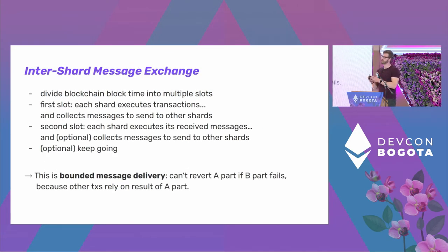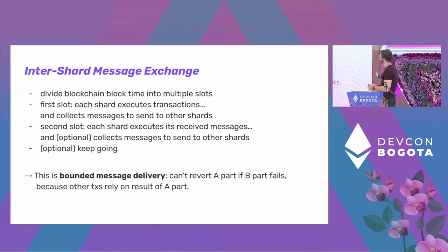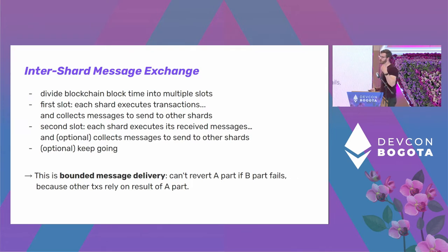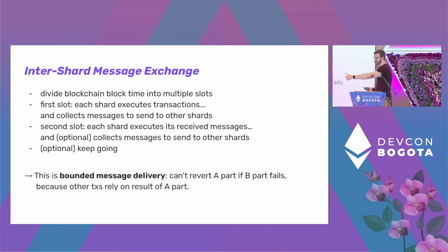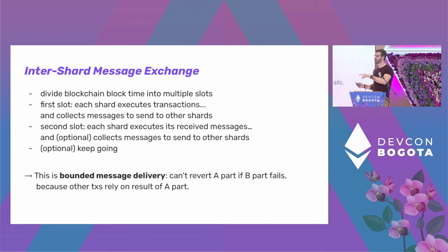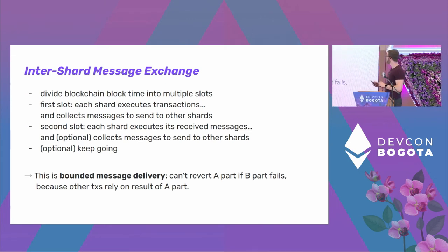Instead, let's reduce the number of exchanges between shards and bound this very tightly. The idea is to divide the block time into multiple slots. In the first slot, every shard executes its own transactions and collects messages to send to other shards. In the second slot, all shards exchange messages and run the messages they receive. Optionally you can keep going with many slots, but in practice you probably don't need this — you can get a lot of expressivity with just one hop, one shard talking to another. This is still bounded message delivery though — you can't revert.